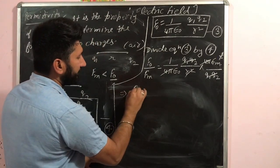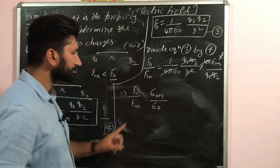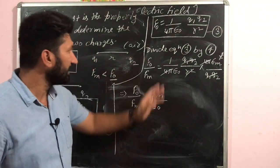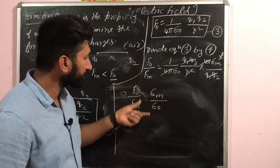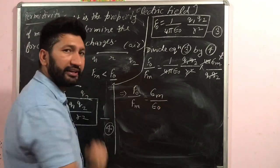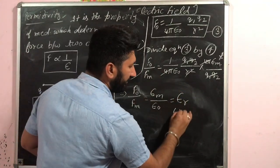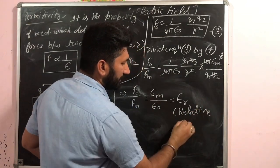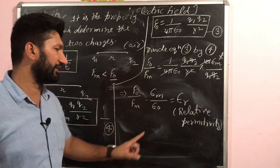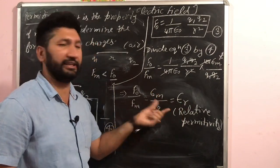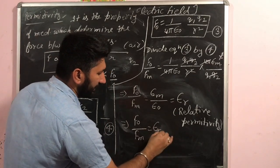By dividing F₀ by Fm, we get F₀/Fm = εm / ε₀. This ratio — electrical permittivity of medium to electrical permittivity of free space — is called relative permittivity, denoted εR. So relative permittivity is the ratio of permittivity of the medium to the permittivity of free space.